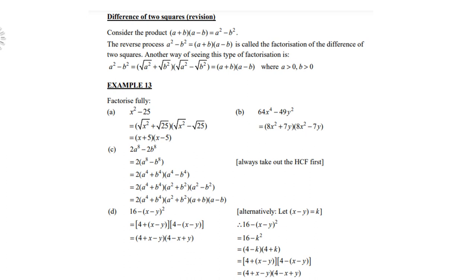Let's look at the example. Factorize fully: x² - 25. Now x² - 25, you can use that certain rule or you don't have to. You just say the square root of x² is x, the square root of 25 is 5. So in the first bracket you write x + 5, and in the second bracket you write x - 5. But remember, both x² and 25 must be squares.